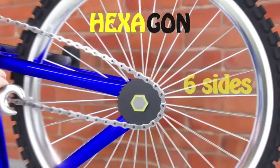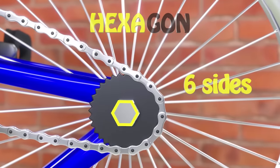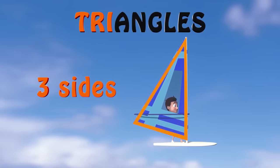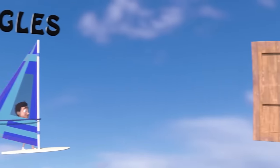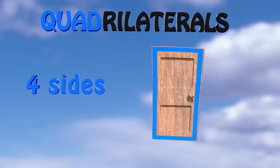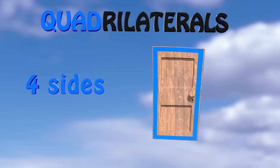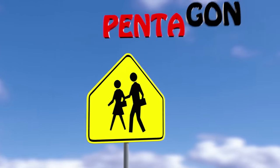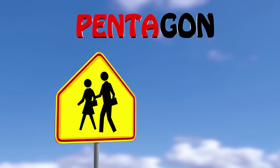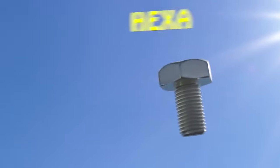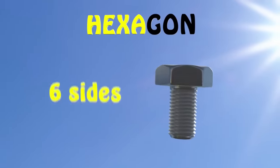Hexagons have six sides like a bolt we twist. Tri means three, and quad means four, penta means five, and hexagons have six.